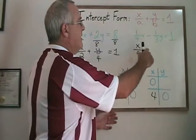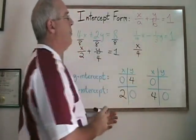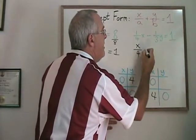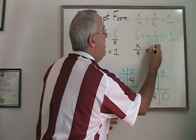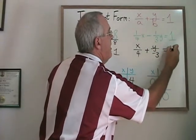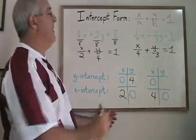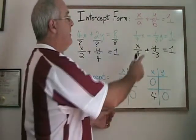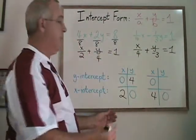The way to express the minus one-third y as plus y over b is to write plus y over negative 3. Adding a negative is the same as subtracting, and this tells us that our b is not equal to 3. It's equal to negative 3.